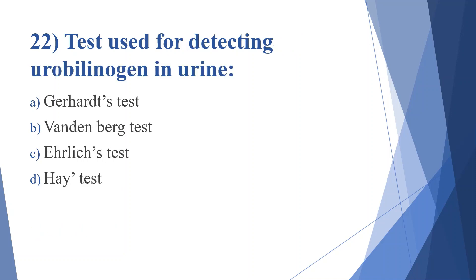Twenty-second question: test used for detecting urobilinogen in urine. Option A: Gerhardt's test. Option B: Vandenberg's test. Option C: Ehrlich's test. Option D: Haye's test. Answer is option C, Ehrlich's test.